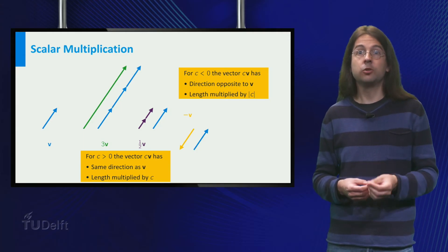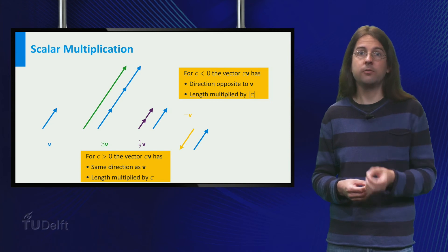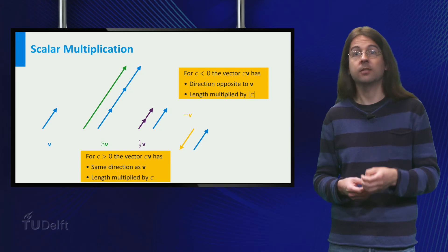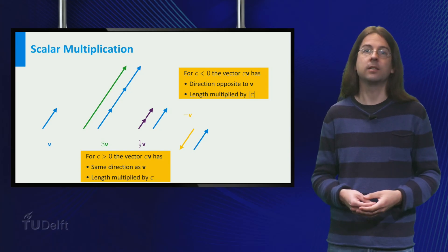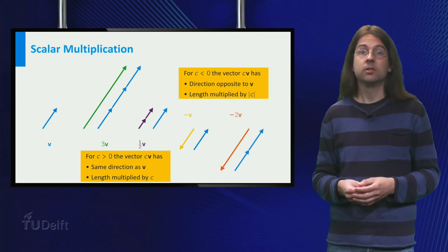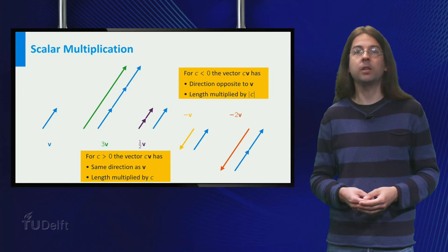In this way we ensure that v plus minus v equals 0, where we use the 0 vector, the unique vector that has length 0 on the right hand side. If we multiply by minus 2, the direction is flipped and the length is multiplied by 2.